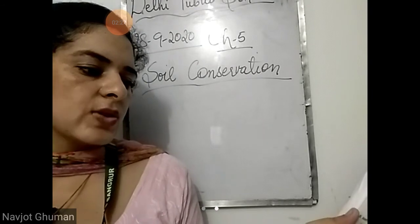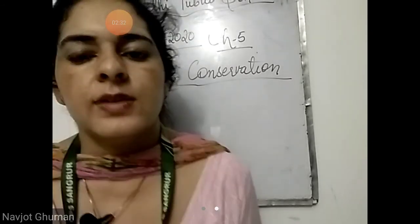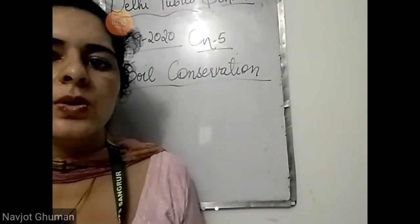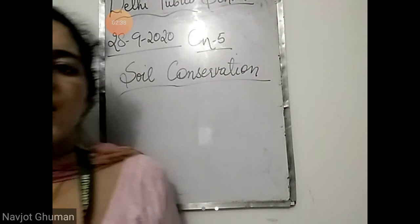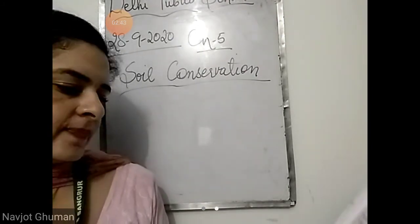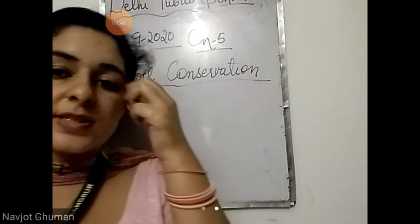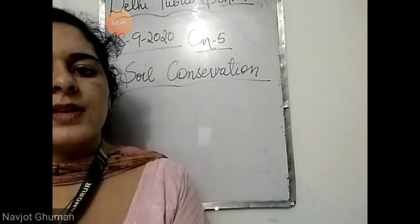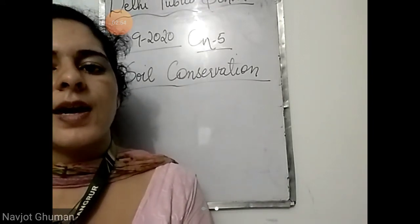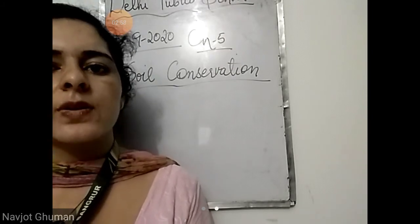Define soil and name the three types of soil. Soil is the uppermost layer of the earth where plants grow. The three types of soil are sandy soil, clay soil, and loamy soil. Loamy soil contains equal proportions of clay, sand, and silt particles, and this soil is best for growing crops.